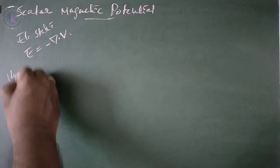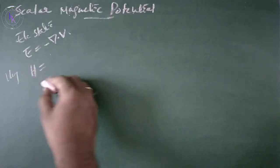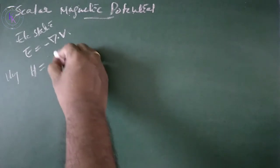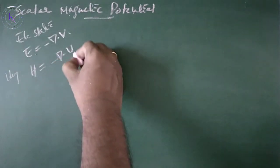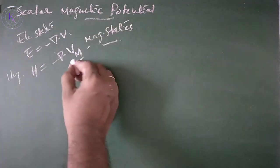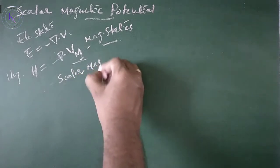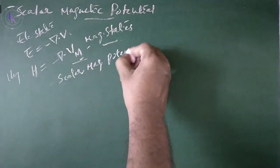Similarly, in magnetostatics, we have a relation that the magnetic field intensity H is given by minus del Vm. M suffix represents it is a magnetic field. Vm is a scalar magnetic potential.